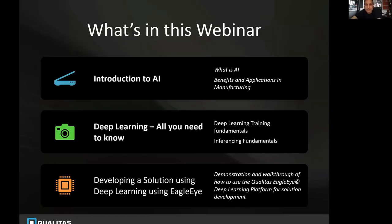This webinar will cover three primary topics. First, an introduction to AI — especially as it relates to manufacturing — addressing common misconceptions about what AI can and can't do. Second, a deeper dive into deep learning fundamentals. Third, a demonstration and walkthrough of a sample application using our Qualitas Eagle Eye product, which uses deep learning for common industrial applications.